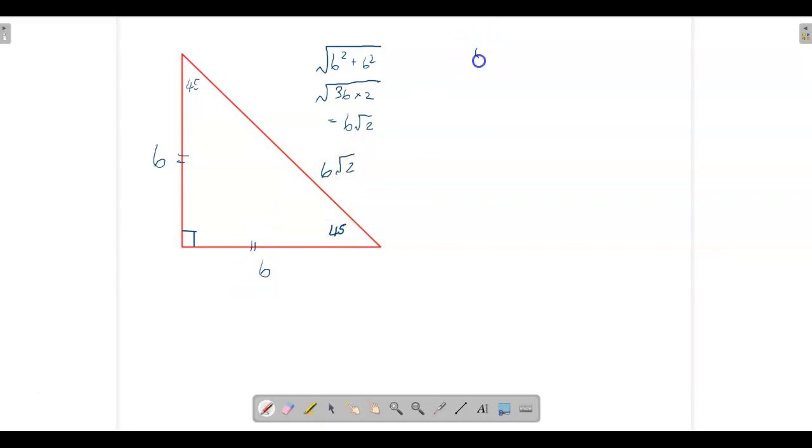So I can go to either 45 angle and look at the side opposite the 45, so let's take this one, it's six. I divide it by the hypotenuse which is six root two, and that simplifies to one over root two.